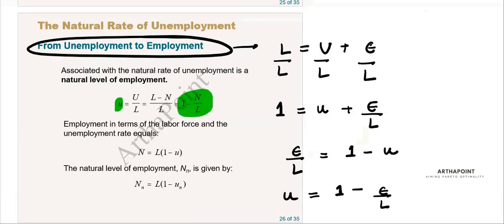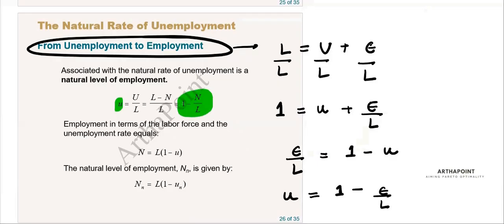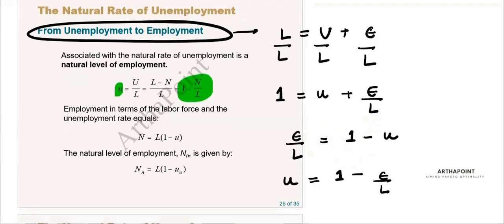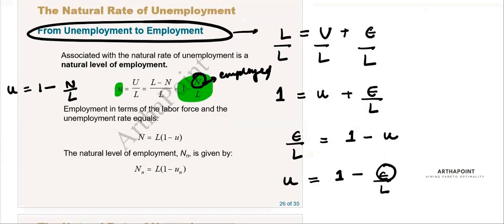Now, if u equals one minus n/L, where L is the total labor force and n is the number of people employed — you can write it as n or e, they are synonymous.